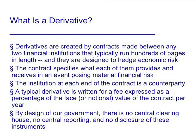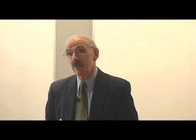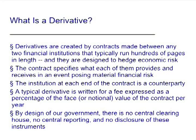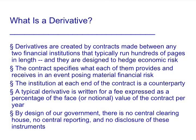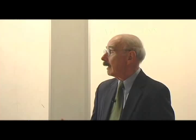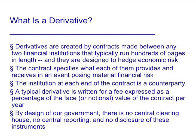What is a derivative? Derivatives are created by contracts made between any two financial institutions. They typically run hundreds of pages in length, and they are designed to hedge economic risk. The contract specifies what each side will give in an event posing material financial risk. The institution at each end of the contract is called a counterparty. A typical derivative is written for a fee expressed as a percentage of the face, or notional value, of the contract.